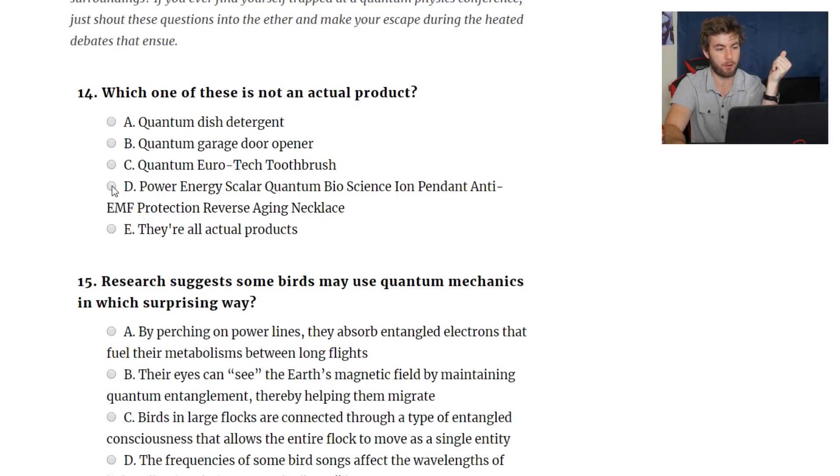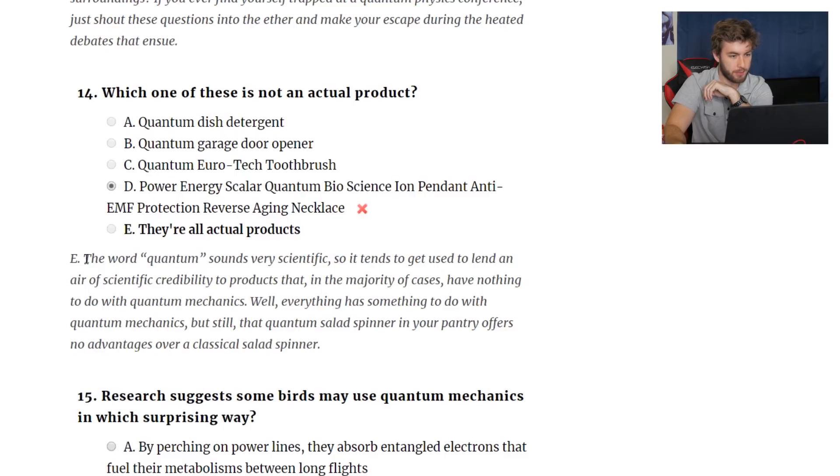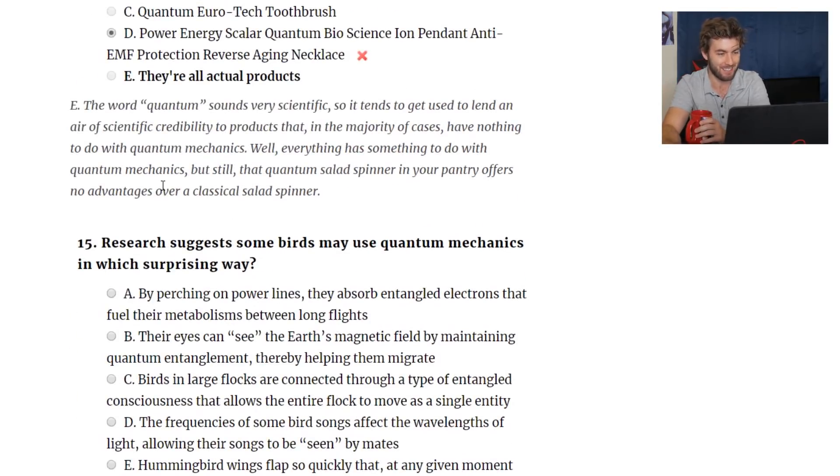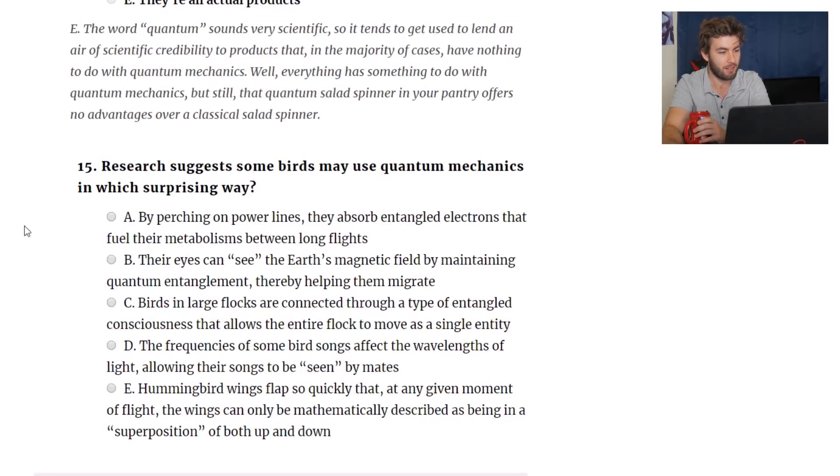In before it actually is. I was wrong. They are all products. What? Whose idea? Power energy scaler. It's just every buzzword in physics. Bioscience ion pendant anti-EMF. That's ridiculous. Everything has something to do with quantum mechanics, but still that quantum salad spinner in your pantry offers no advantages. You're very classical. Oh, spinner. Get it? I wonder if they meant to do that.